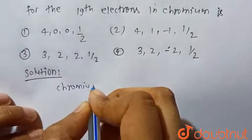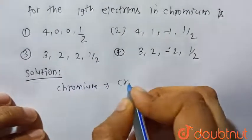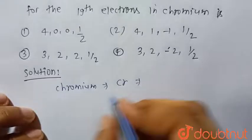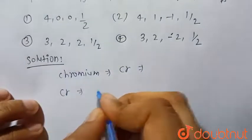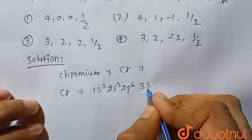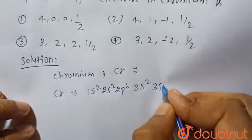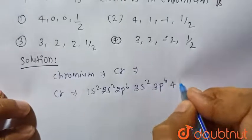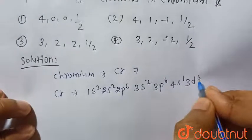So we know that chromium, that is Cr, and its electronic configuration will be as follows: 1s² 2s² 2p⁶ 3s² 3p⁶ 4s¹ 3d⁵.